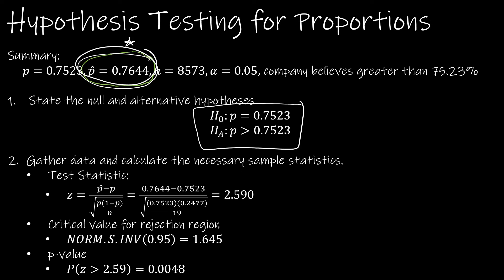We already have our null and alternative hypotheses. Our z-score is p-hat minus p. I would not round that to 0.7644, I just did that so you remember which value goes where. This value is not rounded - this was the one given to us, 0.7523. Then p times 1 minus p over n, and then the square root. So I should end up with a z-score of 2.590.